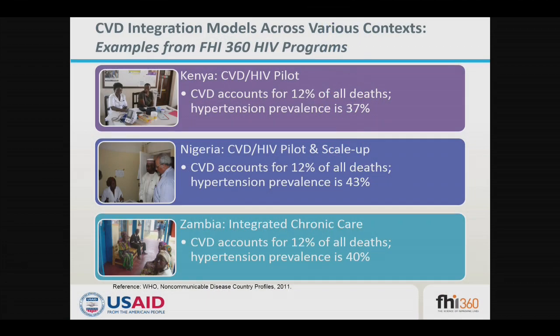This discussion will look at our programs in Kenya, Nigeria, and Zambia. Nigeria and Zambia actually represent our biggest HIV programs in the world, and together we probably have about 500,000 people on treatment. The first pilots on the CVD-HIV integration actually took place in Kenya.